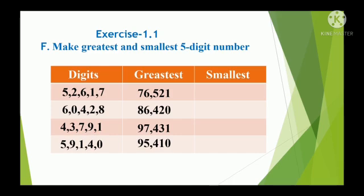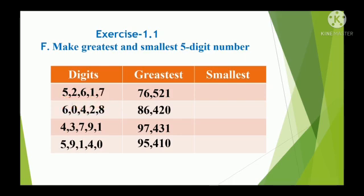Now let us form the smallest number. For making the smallest number, arrange the digits from small to big. For digits 1, 2, 5, 6, 7: arrange from small to big — the smallest number is 12,567.